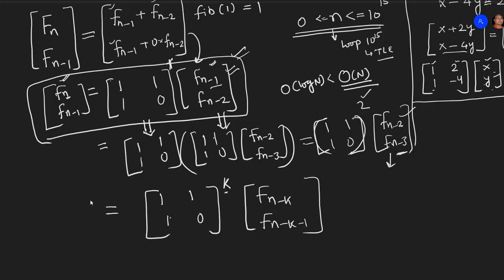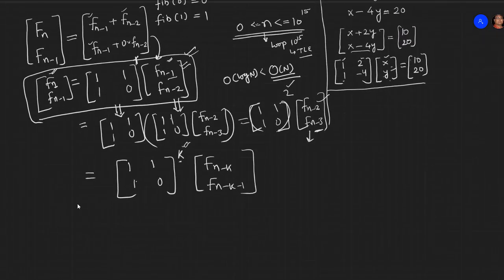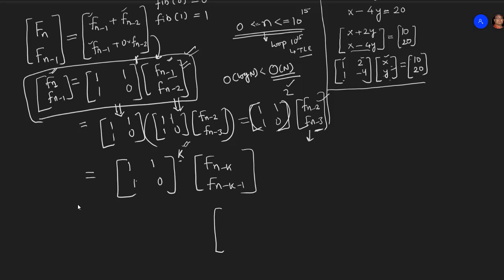Now, we want to get rid of this term k and we want to bring it down to the base cases. So, what I want to know is, after how many steps, basically, what will be the value of k for which this can become f1 and this can become f0. So, it's like further going down and saying, after how many steps will this become 1, will this become 0. So, of course, this will become f of 1, if n minus k becomes equal to 1.